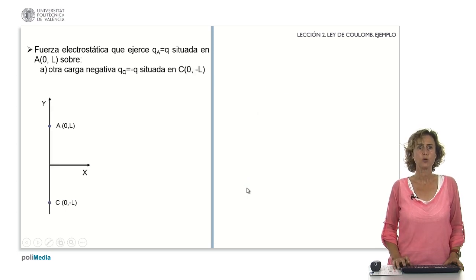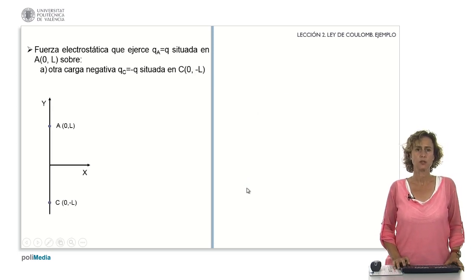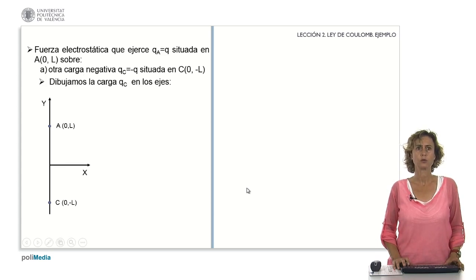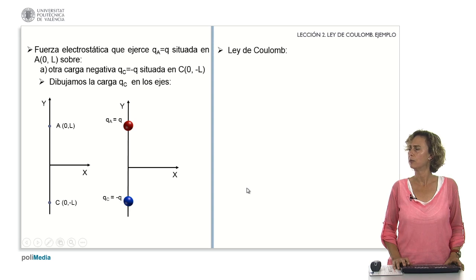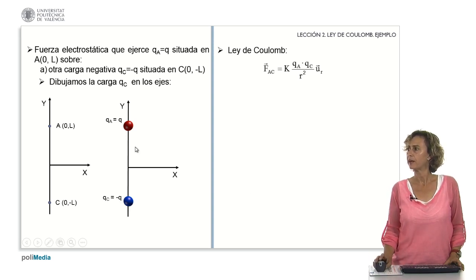Let's see now what happens if we have charges of opposite sign. We locate the points where the charges are. We place on them the charges that we are going to study and we apply Coulomb's law. We calculate the force that the particle A exerts on the charge located at the point C, Q sub C, which are of opposite sign.